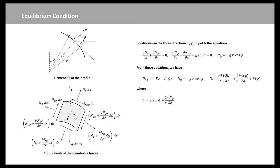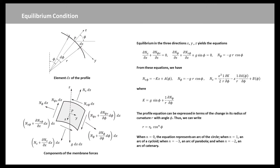These equations take on specific forms for the three profile cases considered. The profile equation can be expressed in terms of the change in its radius of curvature R with angle phi. The expression shows here, where R_0 is the radius of curvature of the profile at the crown.